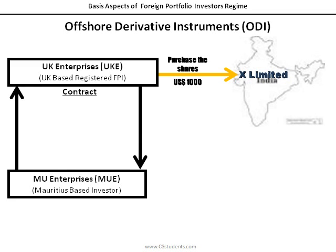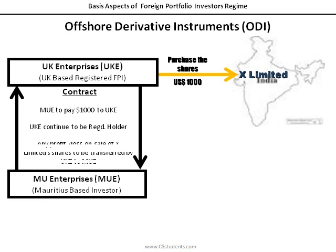The contract would say MU Enterprises will pay the consideration equal to the price paid by UK Enterprises for buying shares of X Limited — in our example, US Dollar 1,000. UK Enterprises will hold the shares in its name but for the benefit of MU Enterprises. The contract would also provide that any profit and loss on the sale of X Limited shares shall be attributed to MU Enterprises. Means UK Enterprises shall be the registered owner of the shares of X Limited, but any profit and loss shall be transferred to MU Enterprises. This means MU Enterprises is actually holding a derivative of the shares of X Limited, as this contract derives its value from the value of the shares of X Limited held by UK Enterprises.